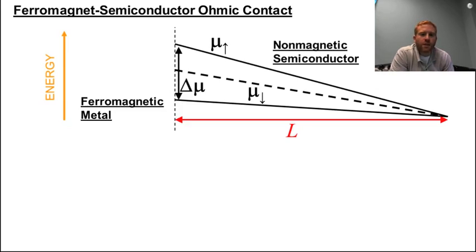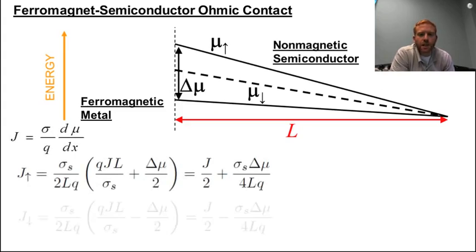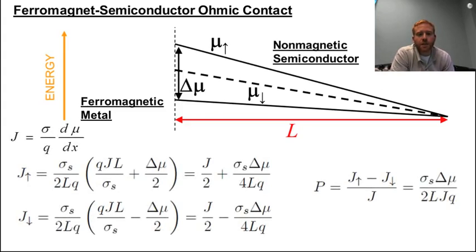Using Ohm's law, we can obtain a relationship between current polarization and this electrochemical potential splitting. The first term in parenthesis is due to the average potential drop over the transport length scale L. Note that although J up and J down are not equal, their sum does equal the total charge current as expected.